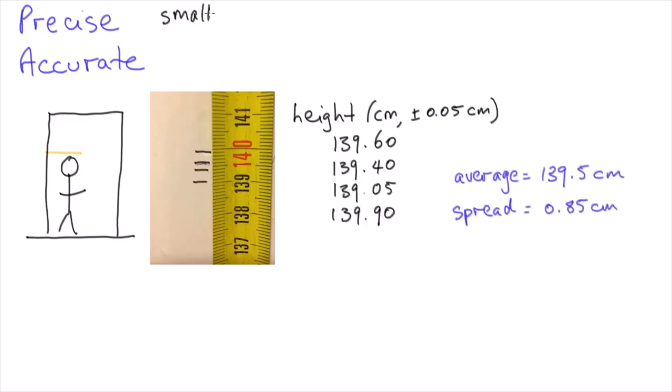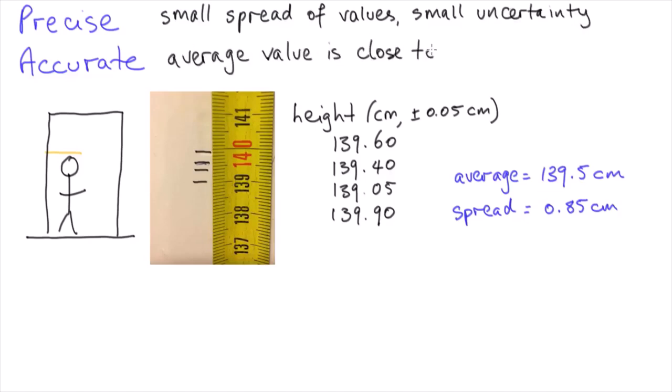Now, if there's a small spread of values with a small amount of measurement uncertainty, we're going to call these measurements precise. If we take the average of all the measurements and find that it's close to the true value, then we say the result is accurate.